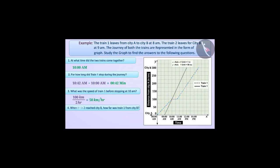When train 2 reached city B, how far was train 1 from city B? Train 2 reached city B at 12 p.m. At this time, train 1 had covered a distance of 190 km. So, 300 km minus 190 km equals 110 km. The distance of train 1 from city B was 110 km.